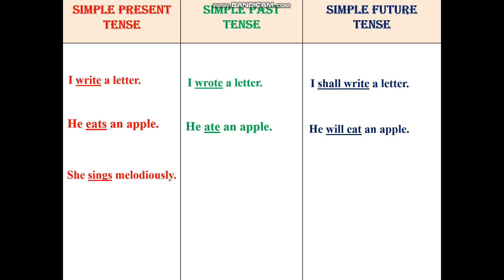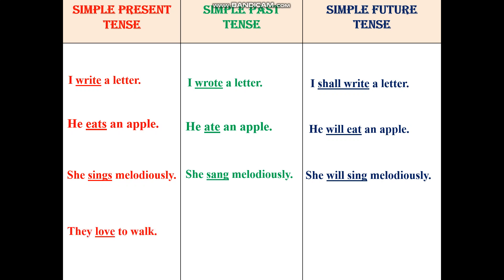She sings melodiously. She sang melodiously. She will sing melodiously. They love to walk. They loved to walk. And they will love to walk. In these examples, you can see that all the principles used in present, past and future have been applied. The verb 'write' in present tense is in the first form. In past, it is in the second form. And in the future tense, it is in the first form with shall or will.